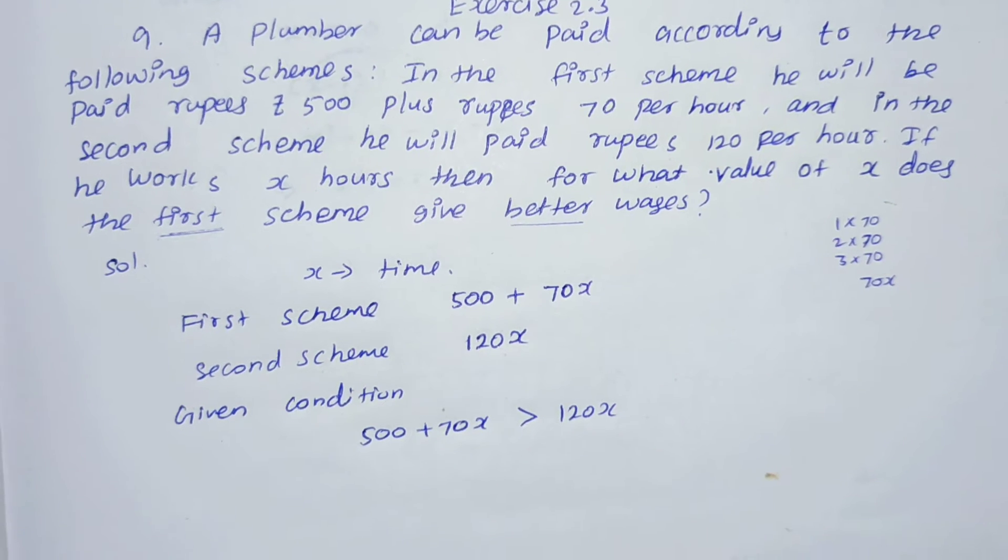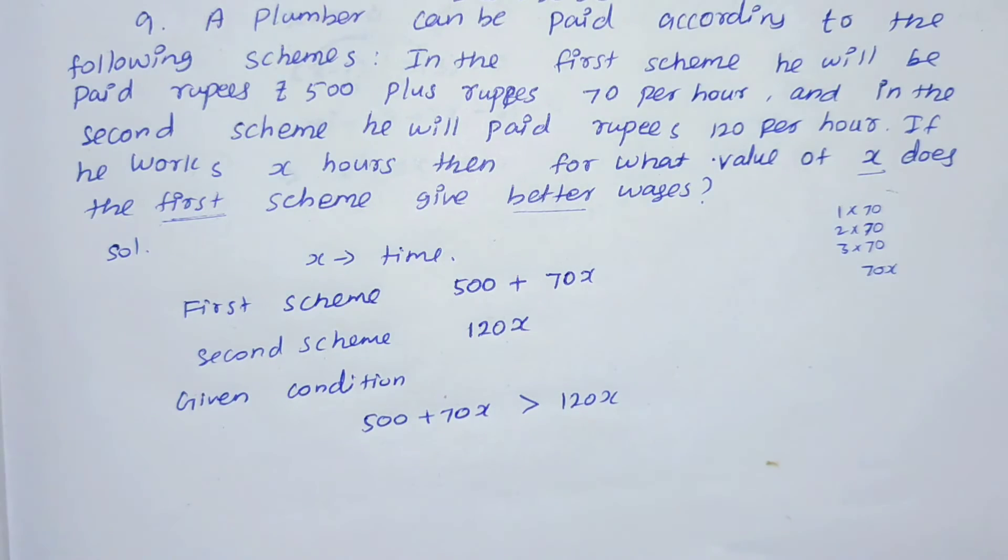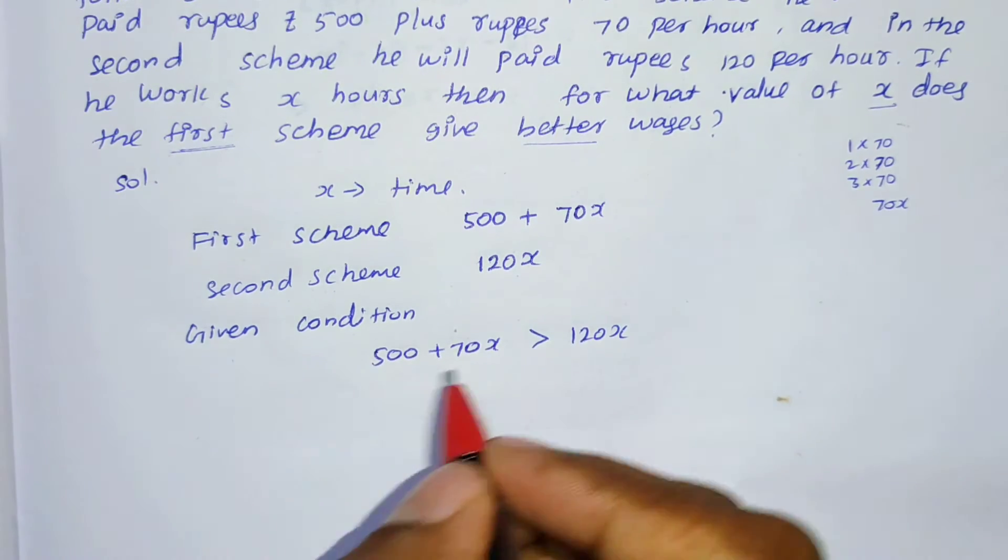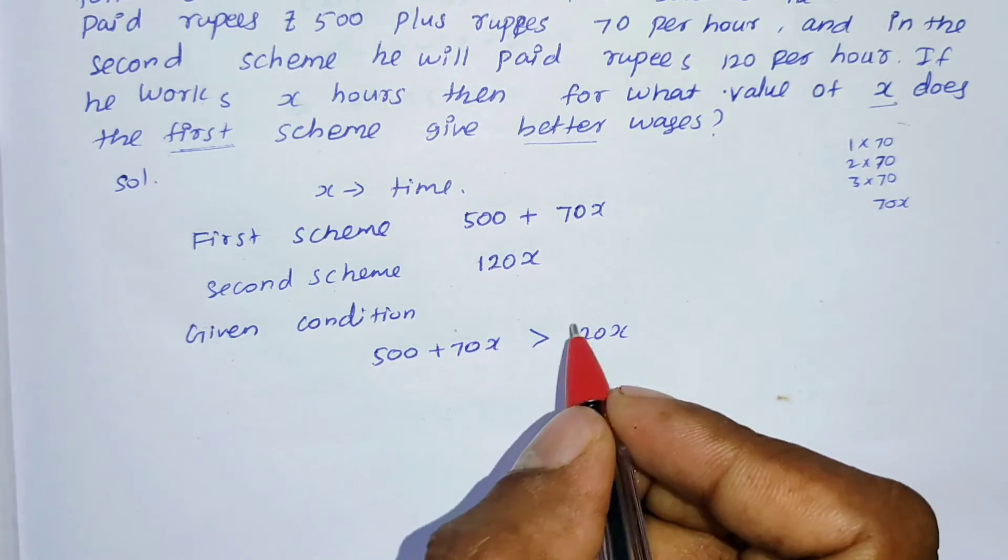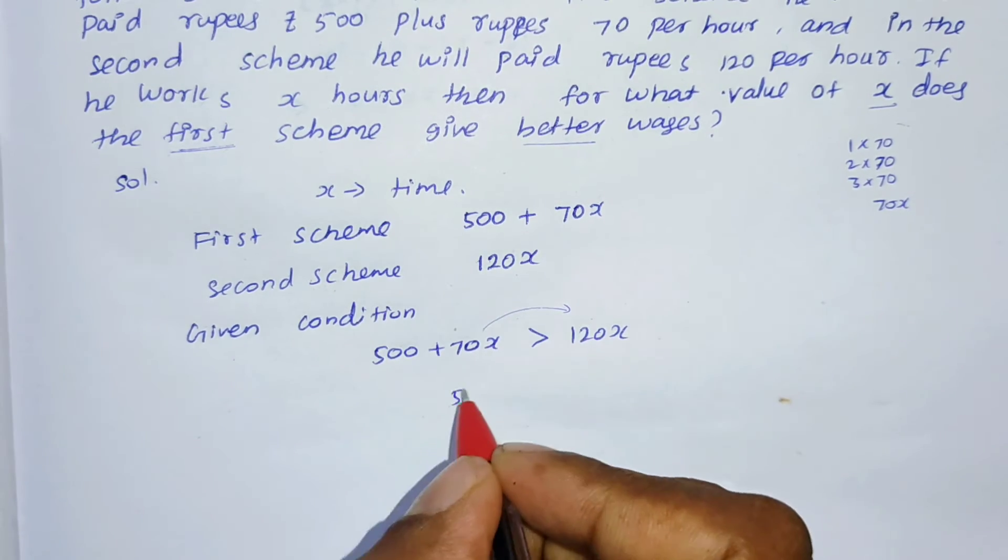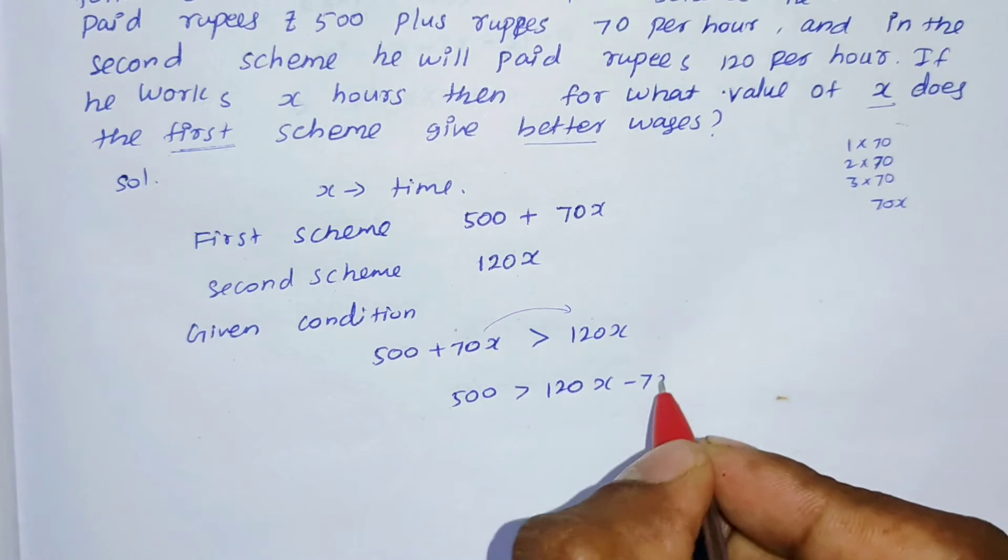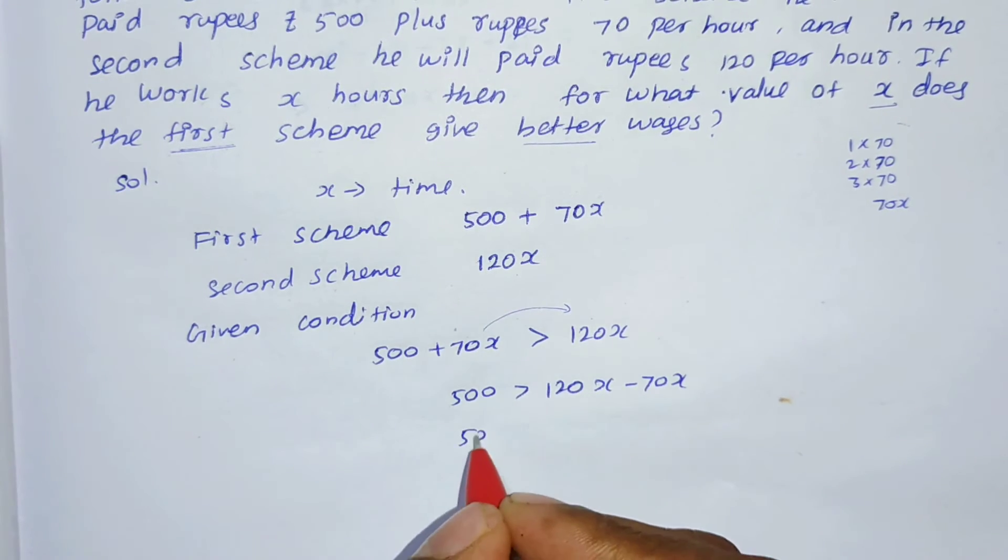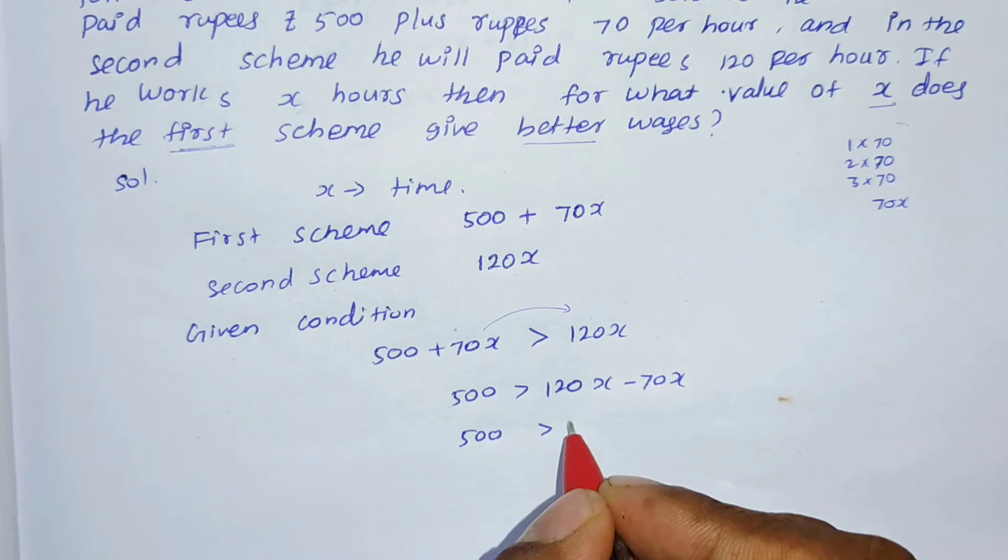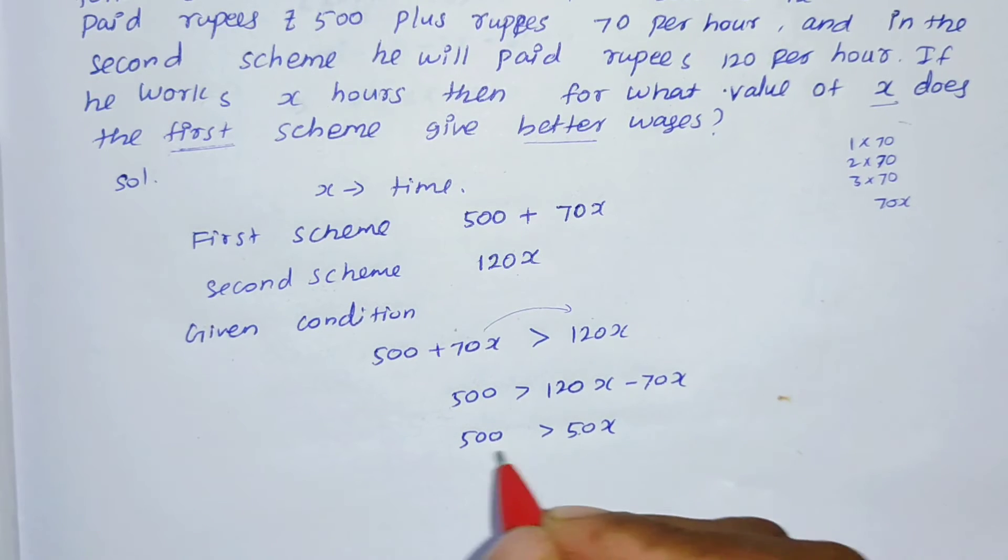Now we will find x. We have 70x on the opposite side. 500 greater than 120x minus 70x. 500 greater than 50x.